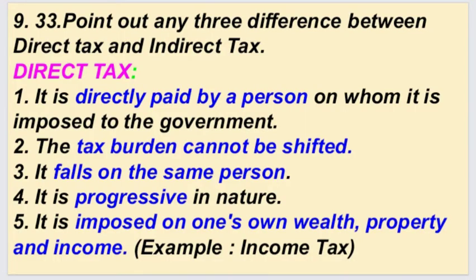Direct tax: It is directly paid by a person on whom it is imposed to the government. The tax burden cannot be shifted — it falls on the same person. It is progressive in nature. It is imposed on one's own wealth, property, and income. For example, income tax.